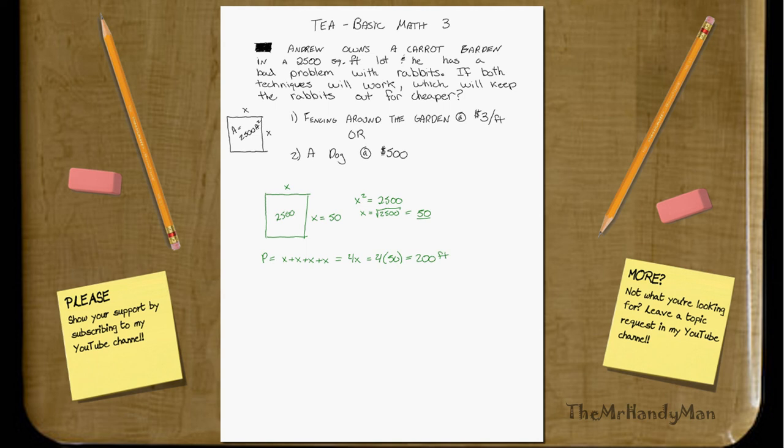Well, to get fencing for 200 feet at $3 per foot, it's going to be 200 feet times 3 bucks, and that equals $600.